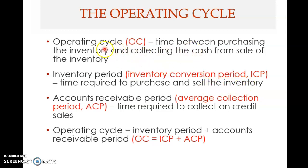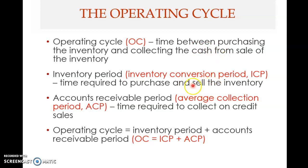The difference between the ICP and the operating cycle is that in the operating cycle you buy inventory and collect cash from the sale, whereas in the inventory conversion period the end point is when you sell the inventory — not when you collect cash. The inventory period is usually shorter than the operating cycle because you sell the inventory earlier and collect cash later, so the end of the operating cycle is typically later than the end of the inventory period.